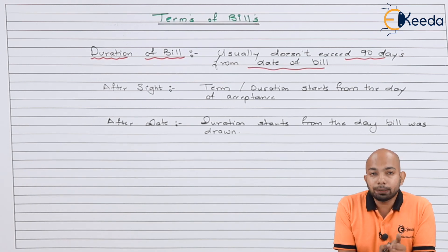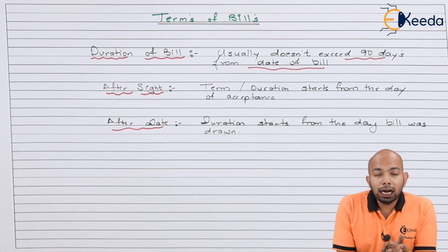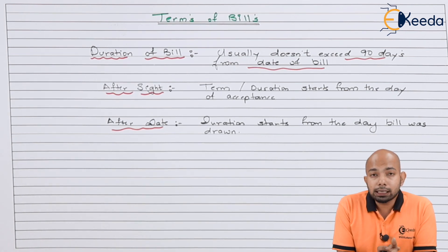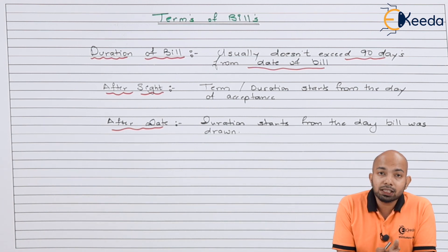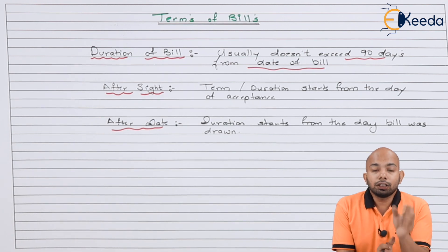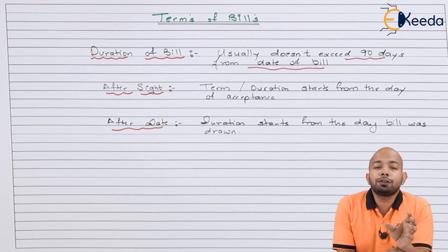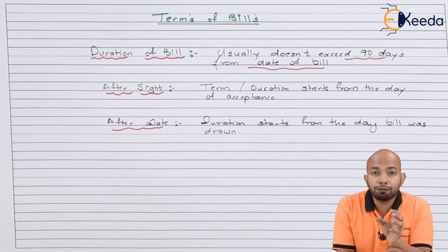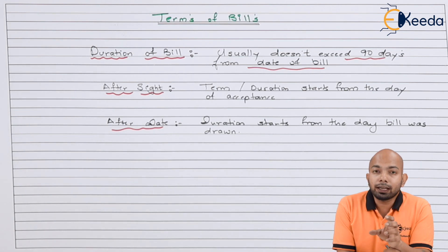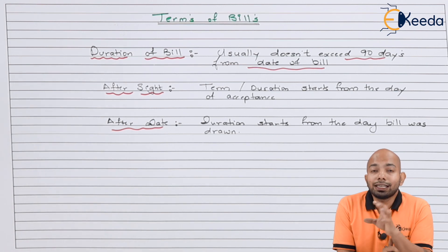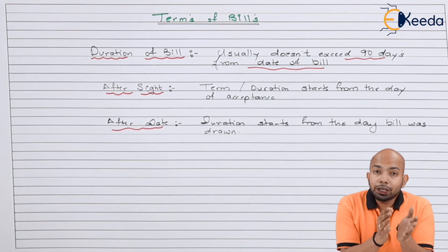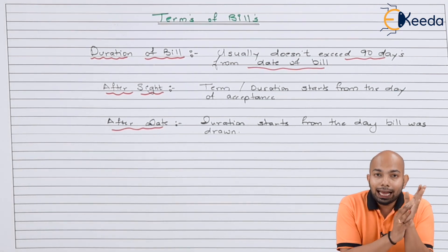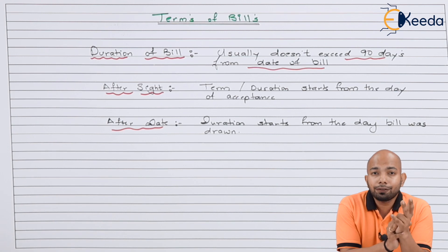After sight means the duration of the bill starts from the day when the bill was accepted. So if the question mentions it is after sight, the duration — whatever it is, up to 90 days — will start after acceptance has been received. If it is after date, then 90 days will begin right from the day when the bill was first drawn. These are the two things to understand within the 90-day maximum.